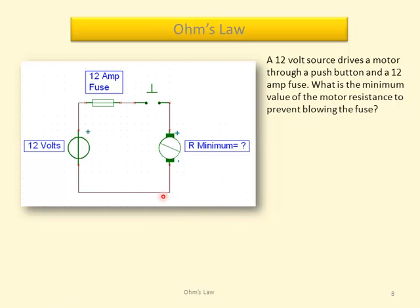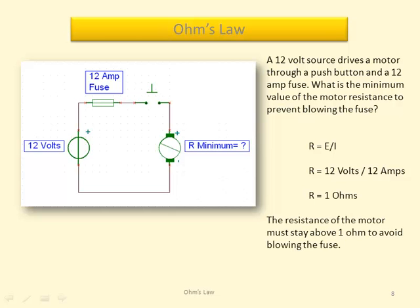A 12 volt source is driving a motor through a 12 amp fuse. What is the minimum value of the motor resistance to prevent blowing the fuse? Well, we know that resistance is equal to voltage divided by current. And we have a 12 volt source with a maximum current of 12 amps. That gives us a resistance of 1 ohm. So the resistance of the motor must stay above 1 ohm to avoid blowing the fuse.